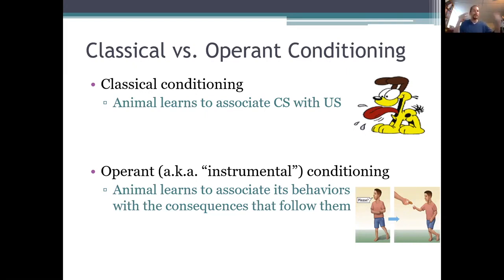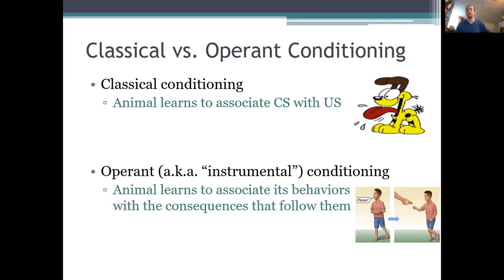So that's one way to think about the difference between classical and operant conditioning. In classical conditioning, you learn to associate two stimuli — you learn to associate the CS with the US. And in operant conditioning, or instrumental conditioning, you learn to associate a behavior with the consequence that follows that behavior. If it's a consequence that you like, then the frequency of that behavior will probably increase — it'll get reinforced. And if it's a consequence you don't like, then the frequency of that behavior will probably decrease — it will get punished.